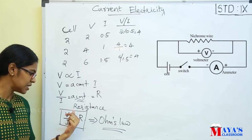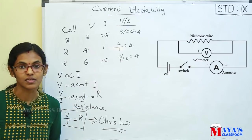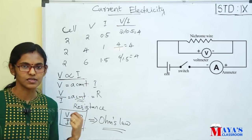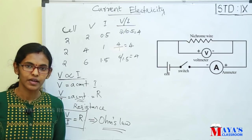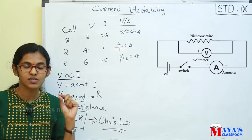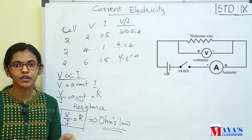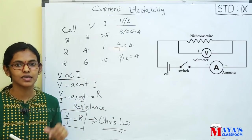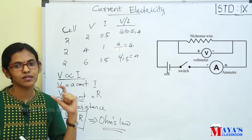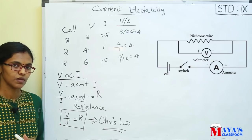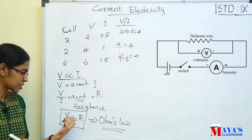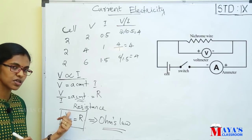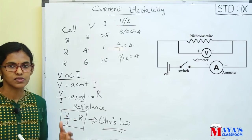What is Ohm's law? V by I is a constant, and that constant is the resistance of a conductor. The current is directly proportional to the potential difference. At constant temperature, the current flowing through a conductor is directly proportional to the potential difference between its ends. The ratio of potential difference to current is a constant — that is also Ohm's law.